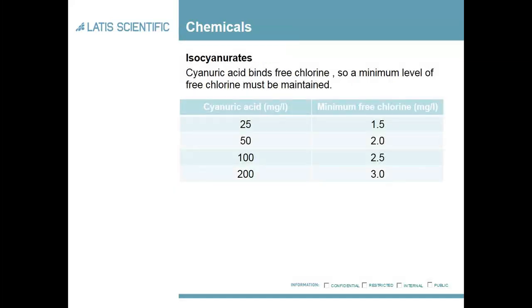The only problem with isocyanurates is that cyanuric acid binds up the free chlorine, so you need to have a minimum reserve level. As you can see from the table, based on the level of cyanuric acid you then have a corresponding minimum free chlorine level. This is usually put in via erosion feeders, as opposed to other methods, to control the level of cyanuric acid.